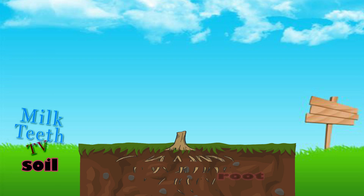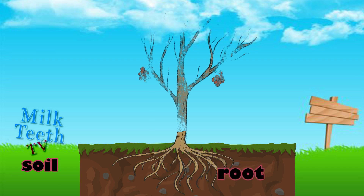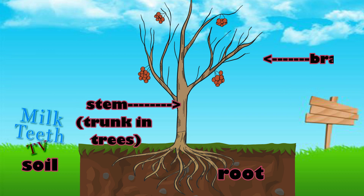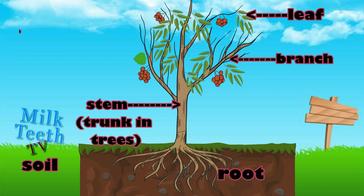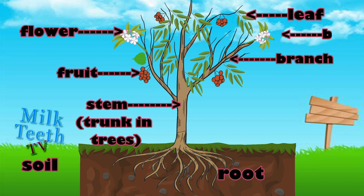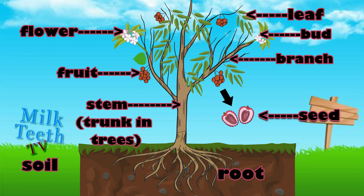Parts of a plant: root, stem, branch, leaf, flower, fruit, bud, and seed.